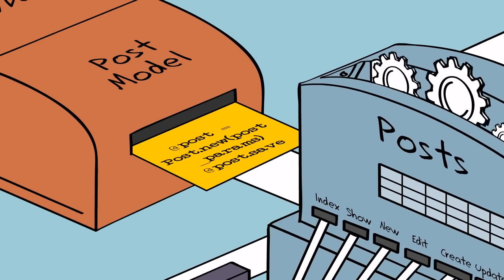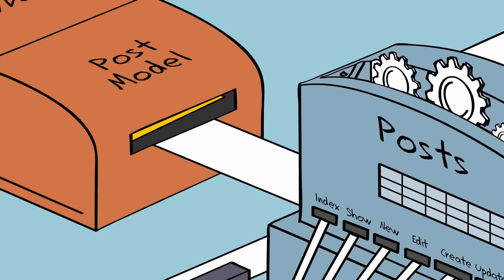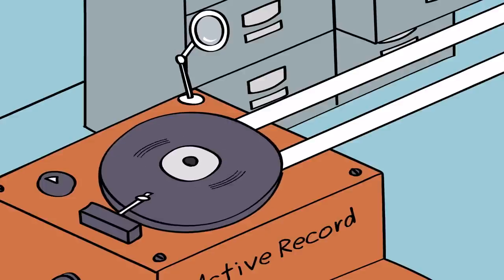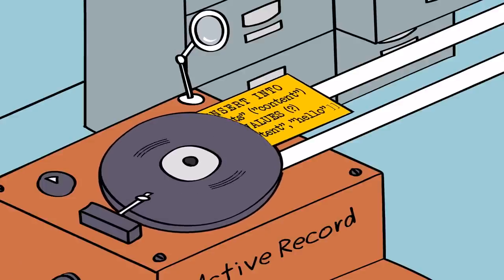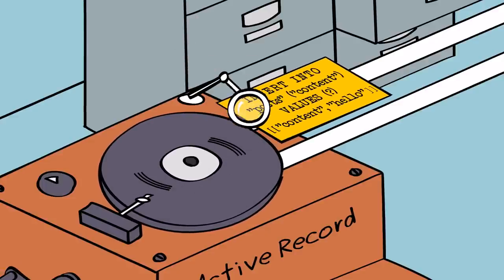The model follows the card's directions for creating a new post. Before it saves the post, it validates the data to make sure the post isn't, for example, blank. Since this post is valid,